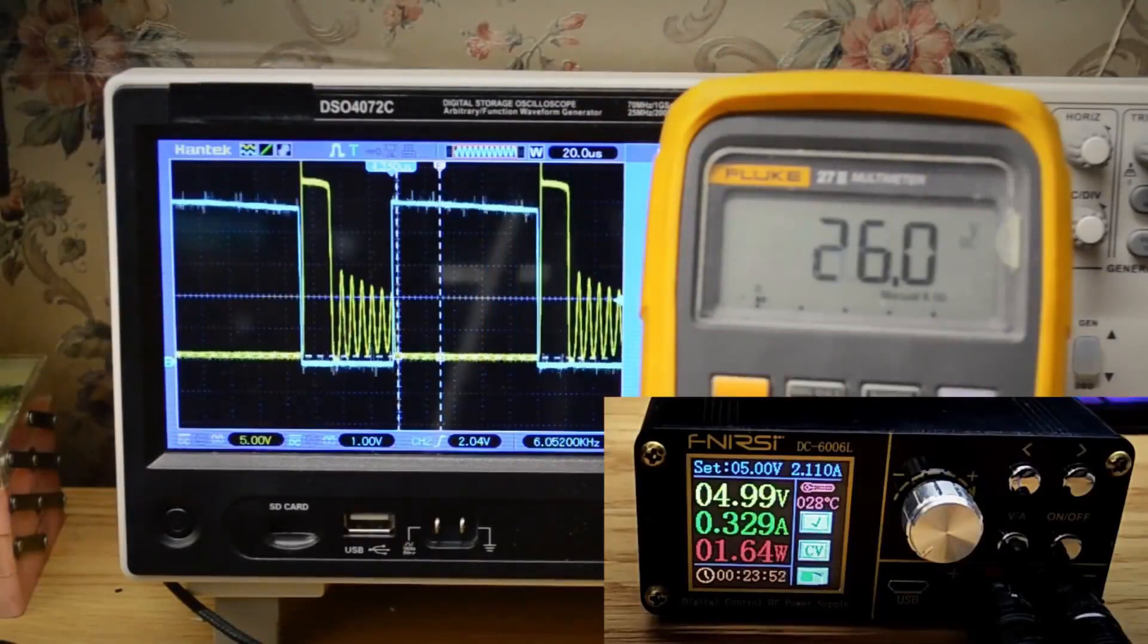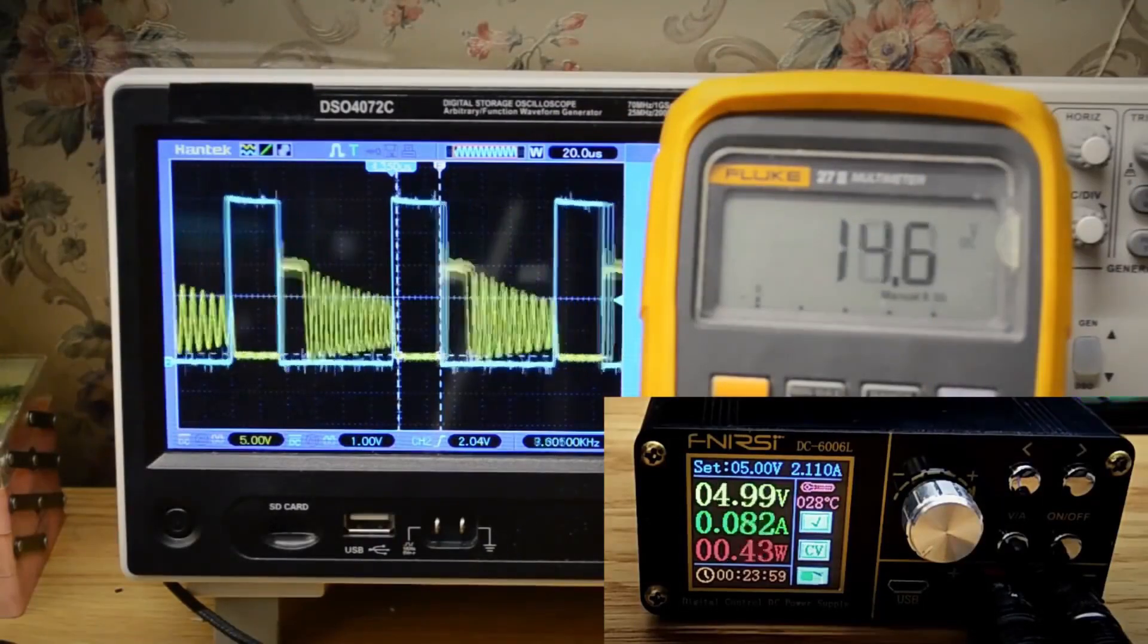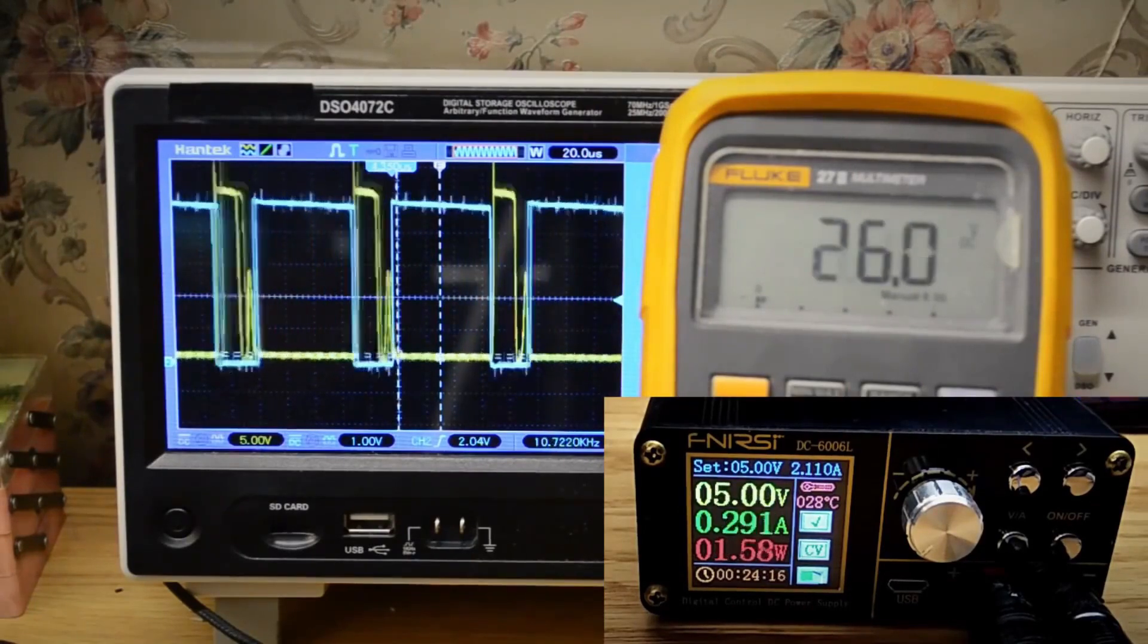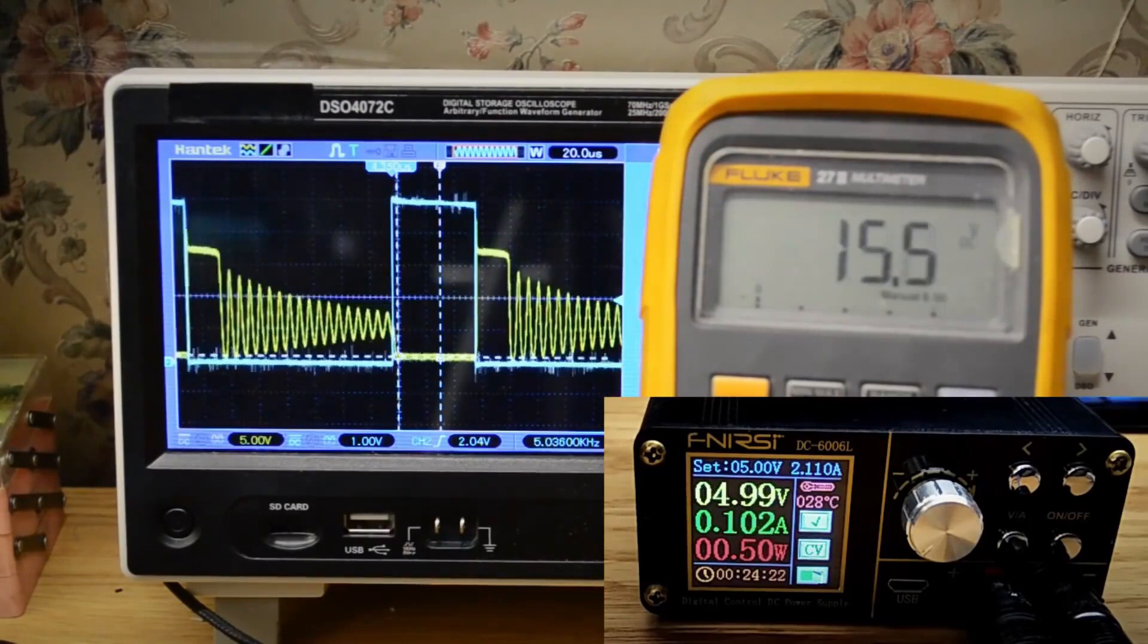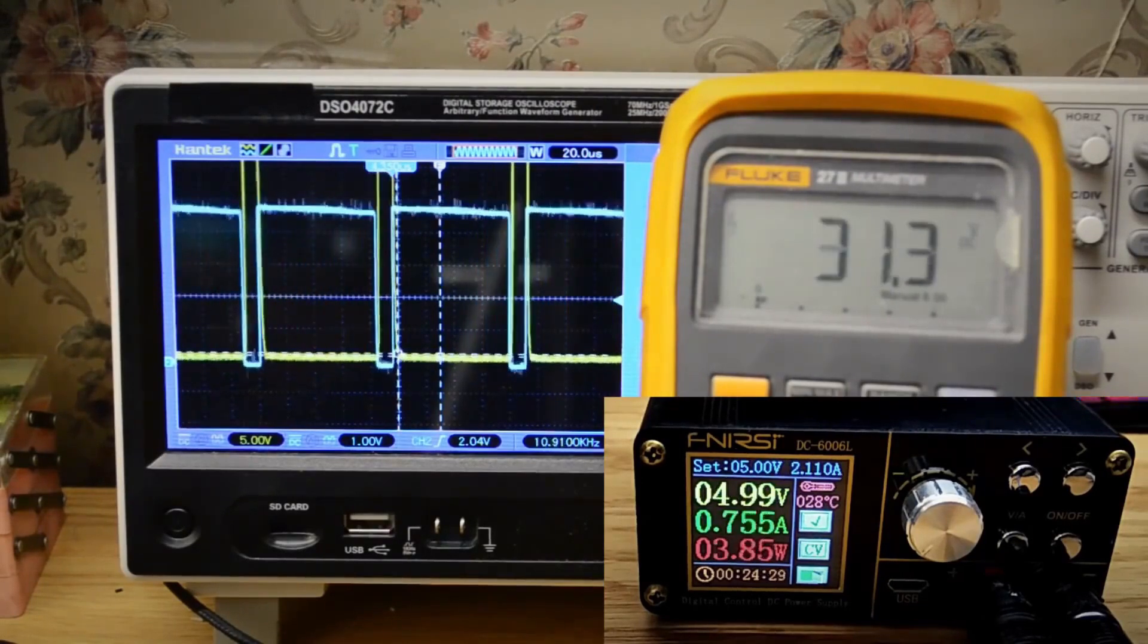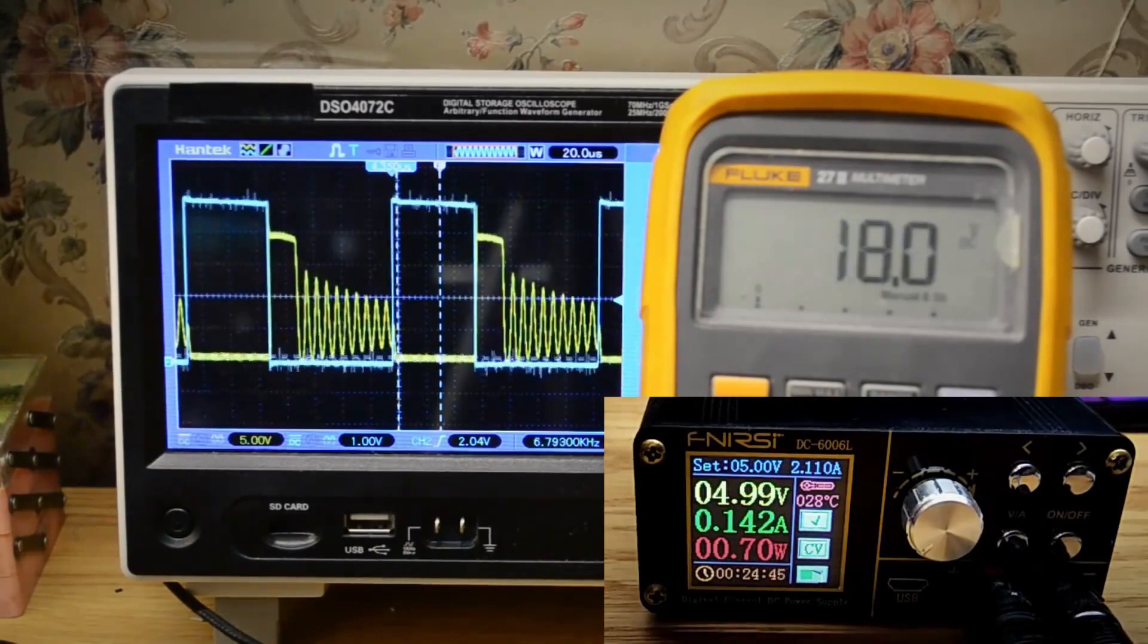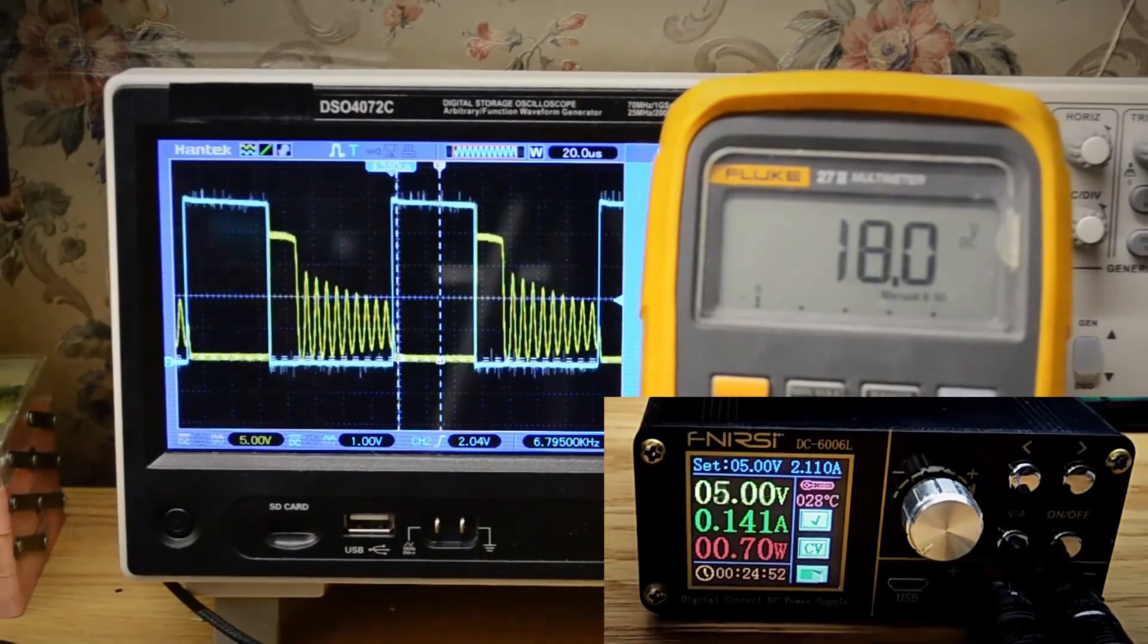Using the potentiometers, we change the duration of the first and second phases of the converter. It is noticeable that when the first phase is increased, the amount of energy stored in the coil increases. And when the second phase is activated, the back EMF spike is higher, and consequently, the output voltage is also higher. This is with a load of 500 ohms.